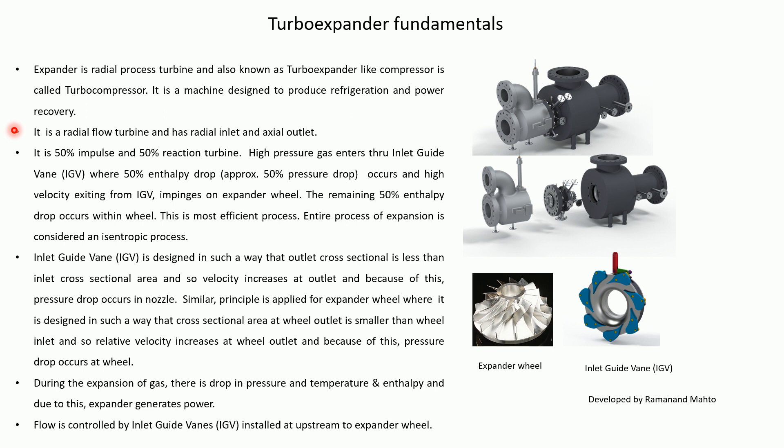The Inlet Guide Vane is designed so that the outlet cross-section area is less than the inlet cross-section area, so velocity increases at the outlet and pressure drop occurs in the nozzle. The Expander Wheel is designed so that the cross-section area at the wheel outlet is smaller than the wheel inlet, so relative velocity increases at the wheel outlet and pressure drop occurs at the wheel. During expansion of gas there is a drop in pressure, temperature, and enthalpy, and due to this the expander generates power.